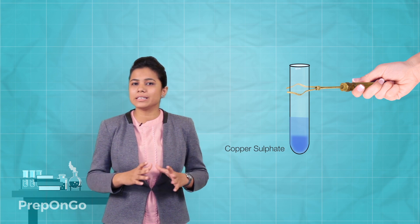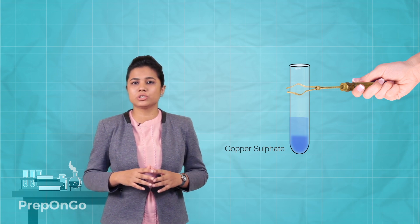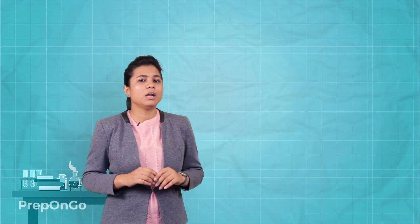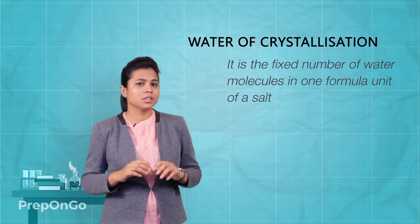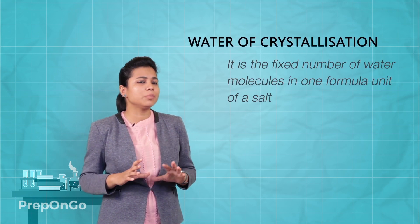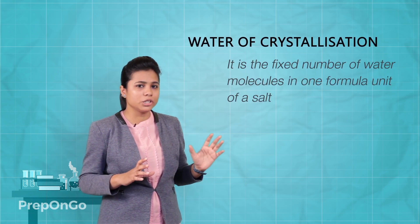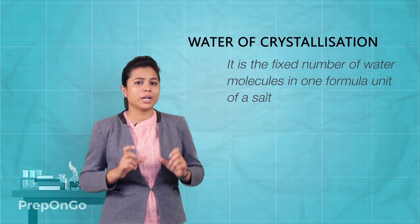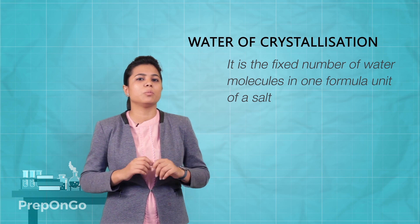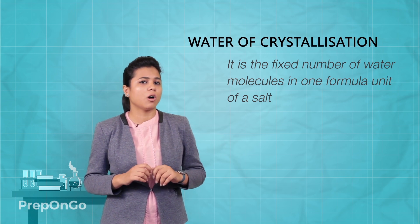Now what are these water molecules called? These are called water of crystallization. Water of crystallization can be defined as a fixed number of water molecules which are present in one formula unit of the salt.